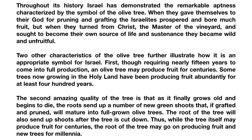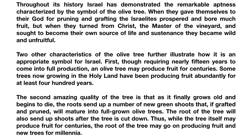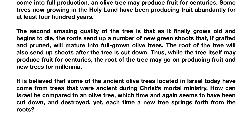Two other characteristics of the olive tree further illustrate how it is an appropriate symbol for Israel. First, though requiring nearly 15 years to come into full production, an olive tree may produce fruit for centuries. Some trees now growing in the Holy Land have been producing fruit abundantly for at least 400 years. The second amazing quality is that as it finally grows old and begins to die, the roots send up new green shoots that if grafted and pruned will mature into full-grown olive trees. The root will also send up shoots after the tree is cut down. Thus, while the tree itself may produce fruit for centuries, the root may go on producing fruit and new trees for millennia. It is believed that some ancient olive trees in Israel today have come from trees that were ancient during Christ's mortal ministry.